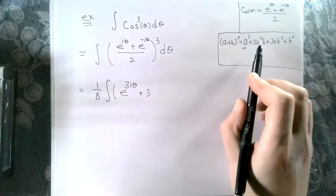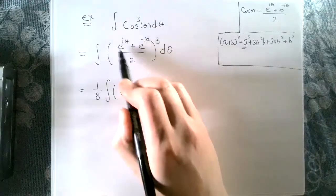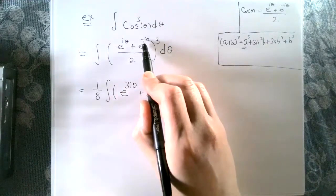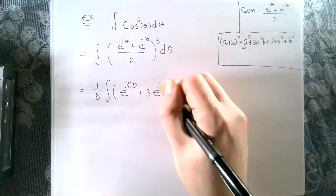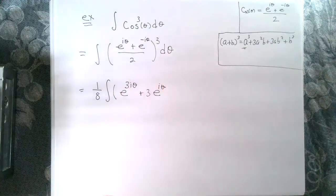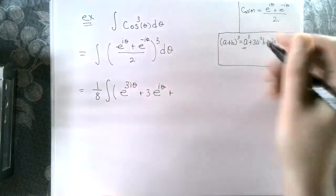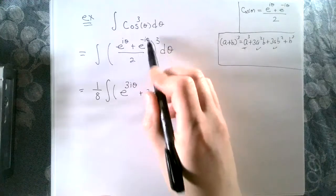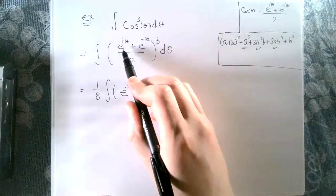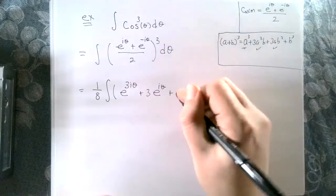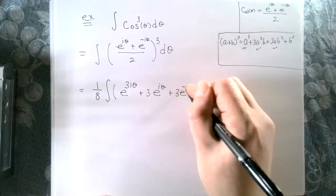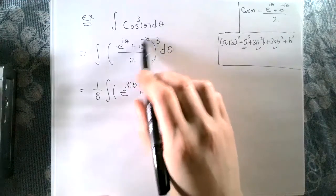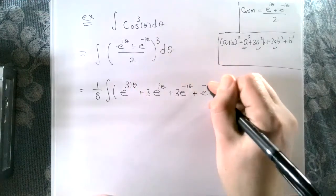Thinking about exponent rules: the second term involves e to the i theta squared times e to the minus i theta, which gives e to the two i theta times e to the minus i theta — adding exponents gives e to the i theta. Similarly, e to the i theta times e to the minus i theta squared equals e to the i theta times e to the minus two i theta, giving three e to the minus i theta. The last term cubed gives e to the minus 3i theta.